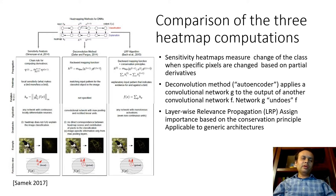So here we talk about three prominent such methods. So in sensitivity heatmaps, the idea is to measure the change of the class when specific pixels are changed based on partial derivatives. So we can think of these as local explanations. There's the deconvolutional method, or autoencoder-based method, which applies a convolutional network, G, to the output of another convolutional network. So as you can see, very similar to how we think about autoencoders.